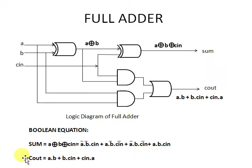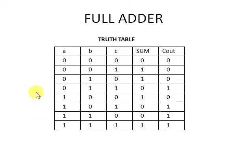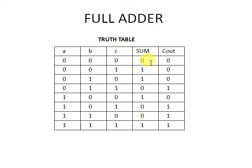This is the Boolean equation for the full adder. Now, the full adder truth table has three inputs and two outputs — sum and C-out. With inputs A, B, and C there are eight input combinations: 000, 001, 010, 011, 100, 101, 110, and 111.